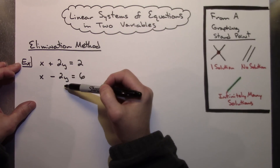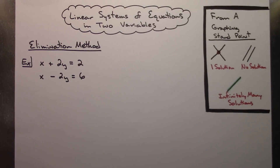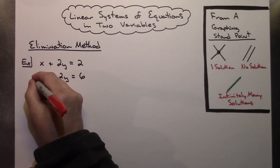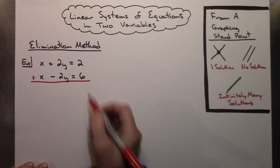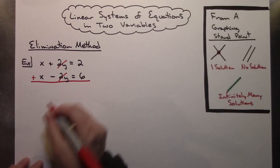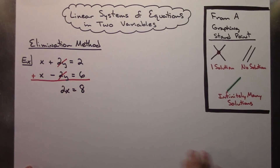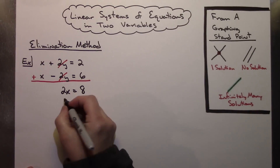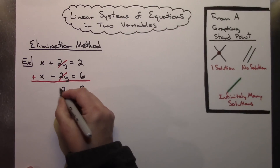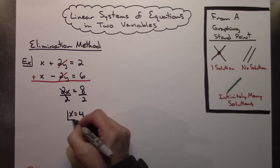In this one, we've got a 2y and a negative 2y. If we add these equations, those y's are going to fall out right away. This is the easiest type of example you would see. Adding those two equations, the y's immediately fall out. X and x give me a 2x, and adding the right sides I get 8. I can divide both sides by 2 and x is going to equal 4. So I have found my x variable.